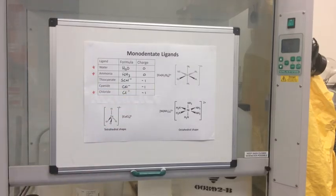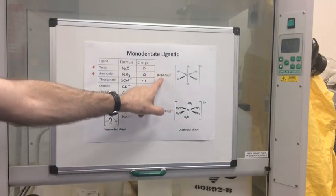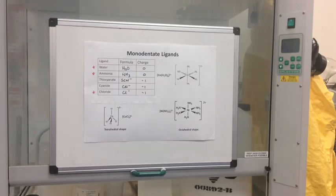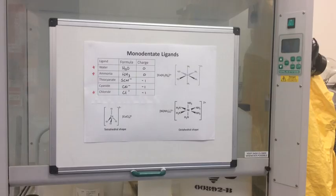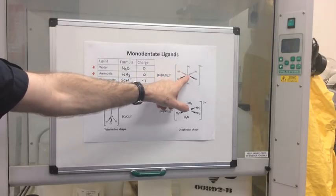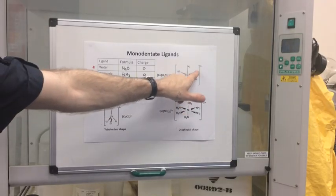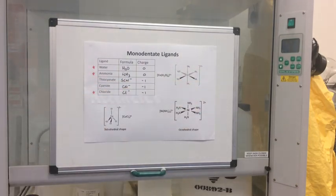Now a little bit about shape. On the right hand side we've got the cobalt hexa aqua 2+ ion. That's an octahedral complex with a 2+ charge. Water has no charge, so the cobalt is in the +2 oxidation state and the overall charge on the ion is 2+. Notice the oxygen must be connected to the cobalt, and the bond angle in an octahedral complex is 90 degrees.